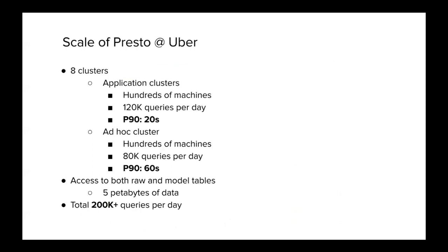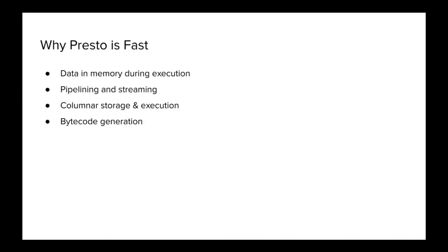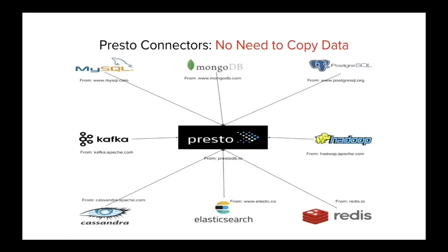Here are some details about the scale of Presto at Uber. We have two data centers running, each of them running four clusters. For business critical use cases, we have dedicated clusters for them. For example, we have hundreds of machines just for a few important customers. We are supporting a P90 under 20 seconds, supporting more than 120,000 queries per day. In each data center, we have one shared ad-hoc cluster, which consists of hundreds of machines and supports more than 80k queries per day.